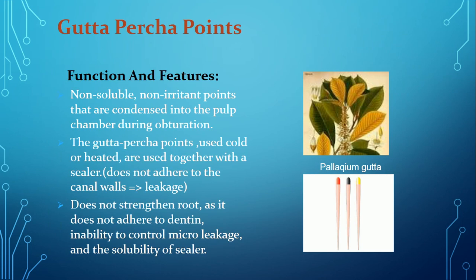Properties of gutta-percha points: they are non-soluble and non-irritant, and are condensed into the pulp chamber during obturation. Gutta-percha points, used cold or heated, are used together with a sealer. They do not adhere to the canal wall, which results in leakage. Gutta-percha points do not strengthen the root as they do not adhere to dentine. There is also an inability to control micro-leakage and the solubility of the sealer is a concern.